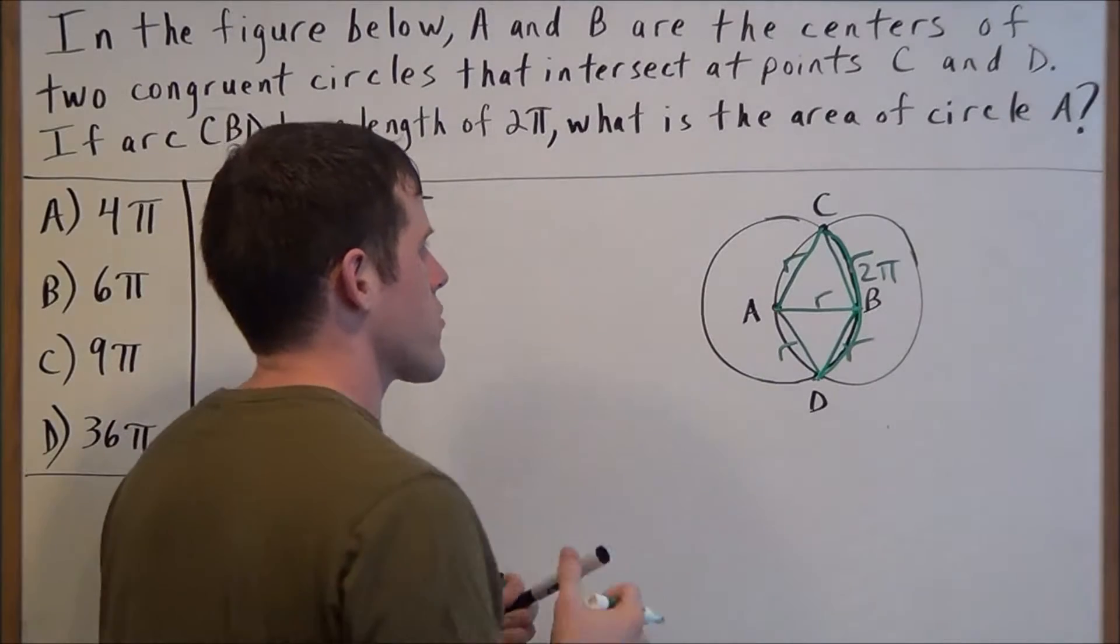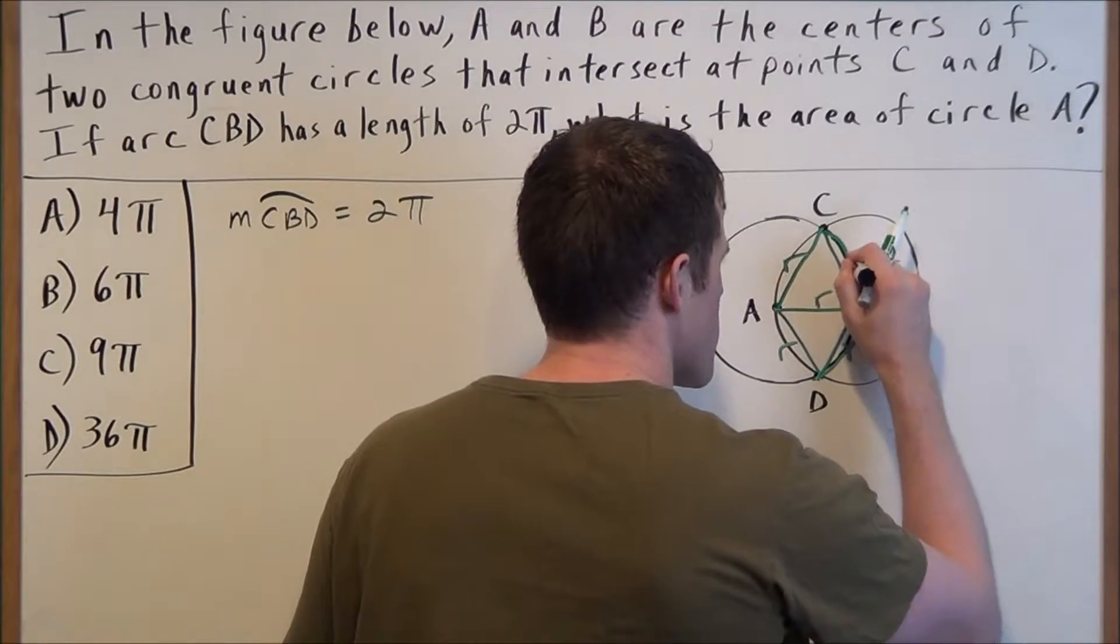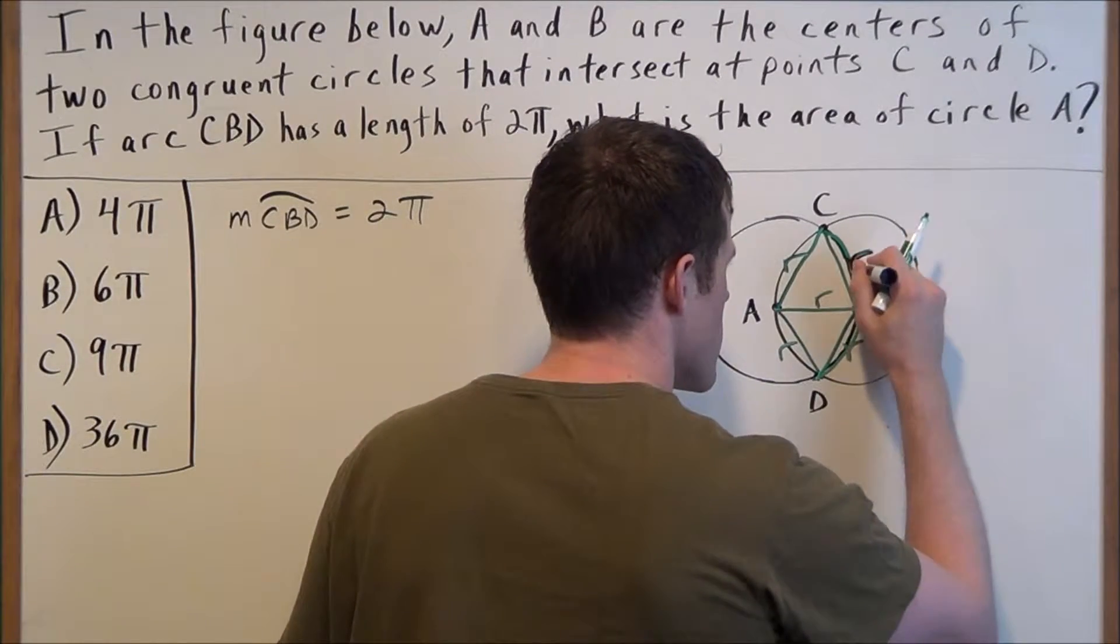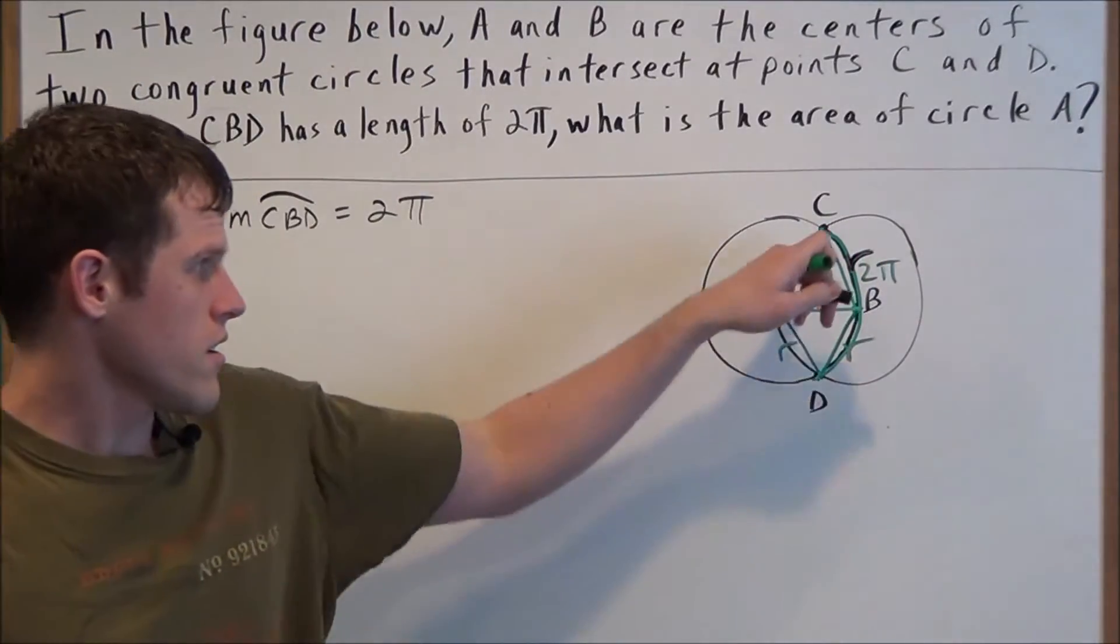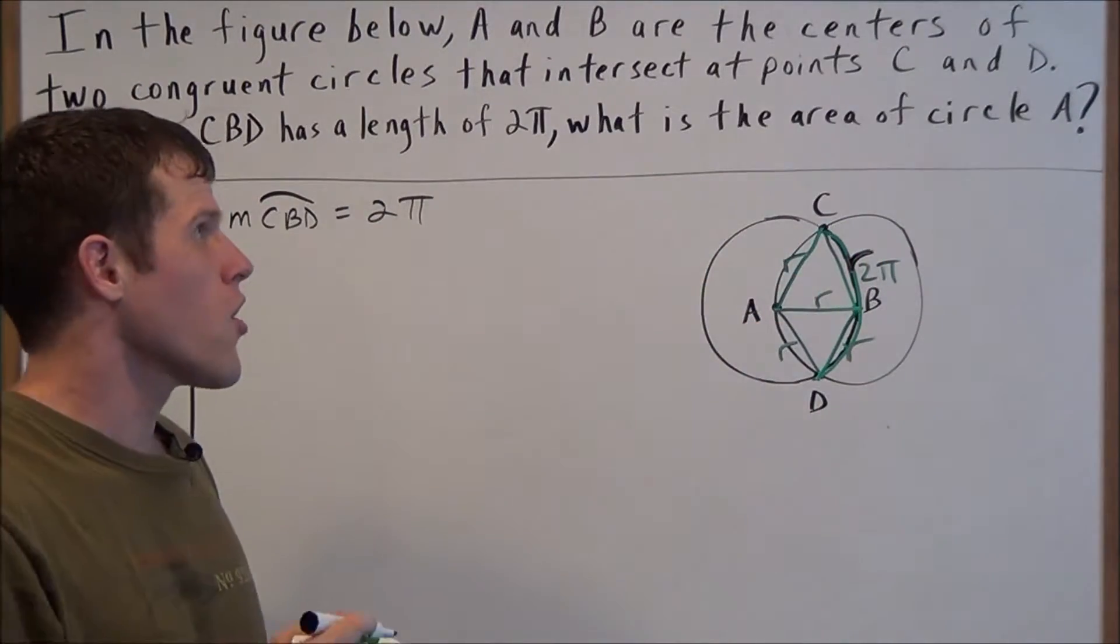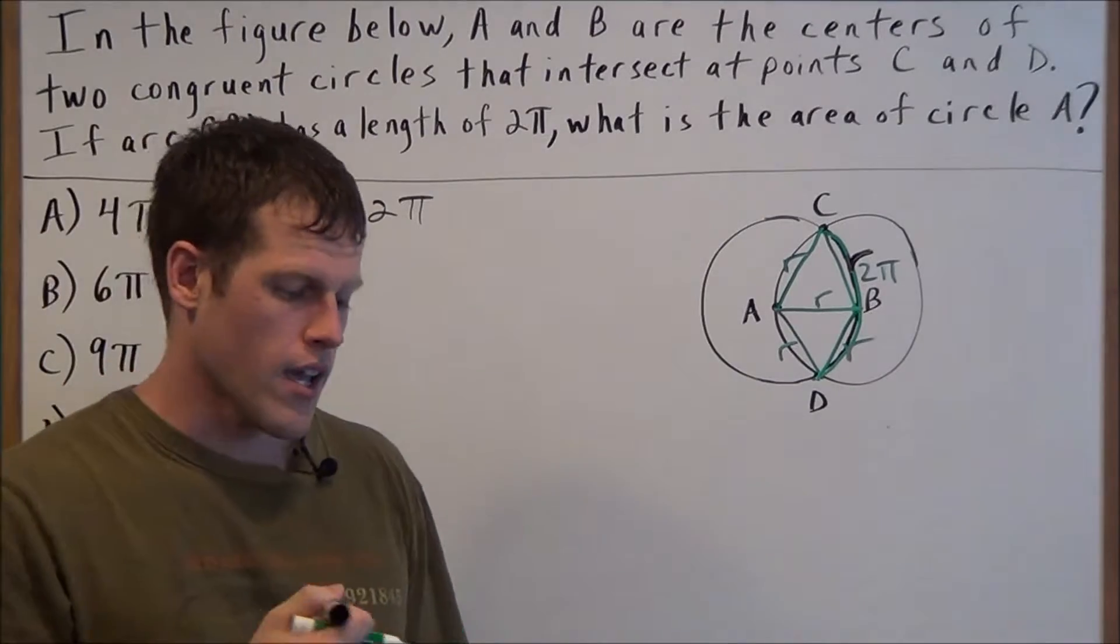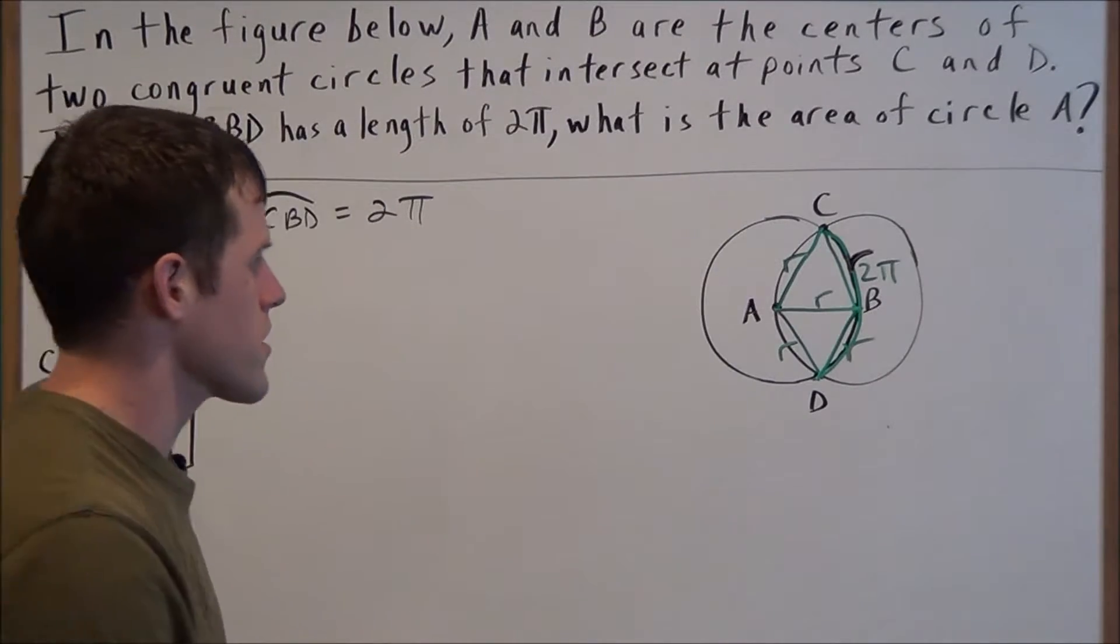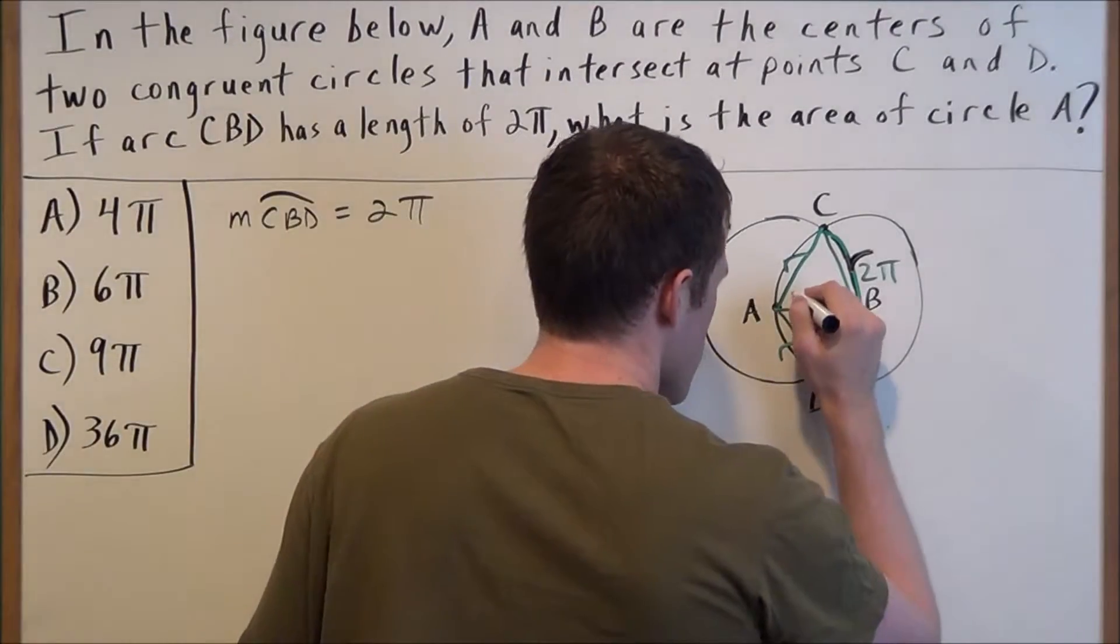So if we look at this diagram a little bit closer now, this is going to tell us that these two triangles that we've made here inside the overlap are both equilateral triangles. And since they're both equilateral triangles, that means the measure of each angle is 60 degrees.